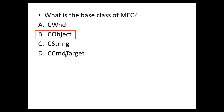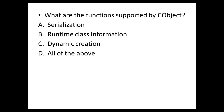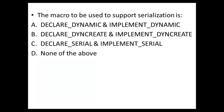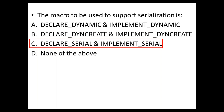Next question: what are the functions supported by CObject? Options are serialization, runtime class information, dynamic creation, or all of the above. The answer is all of the above. Next: the macro to support serialization is DECLARE_DYNAMIC, IMPLEMENT_DYNAMIC, DECLARE_SERIAL/IMPLEMENT_SERIAL, or none of the above? The answer is DECLARE_SERIAL and IMPLEMENT_SERIAL.